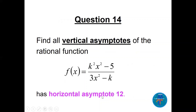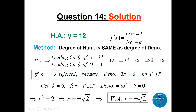Question 14: find all vertical asymptotes of the same rational function with horizontal asymptote 12. Again k²/3=12, so k=±6. This time k=-6 is rejected (gives no vertical asymptotes). Taking k=6, the denominator is 3x²-6. Setting it to zero: x²=2, so x=±√2. There are 2 vertical asymptotes at x=√2 and x=-√2.